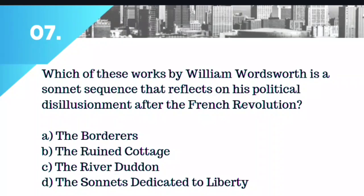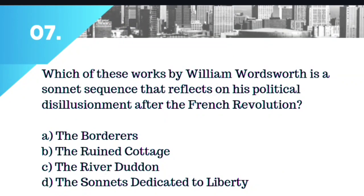Question number 7. Which of these works by William Wordsworth is a sonnet sequence that reflects on his political disillusionment after the French Revolution? Option A: The Borders. Option B: The Ruined Cottage. Option C: The River Dudden. Or Option D: The Sonnets Dedicated to Liberty. The right answer is Option D: Sonnets Dedicated to Liberty.